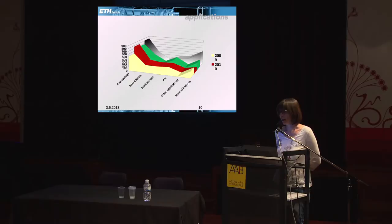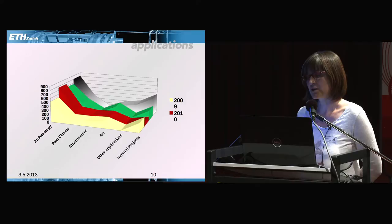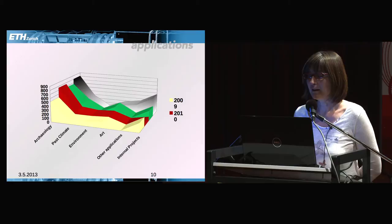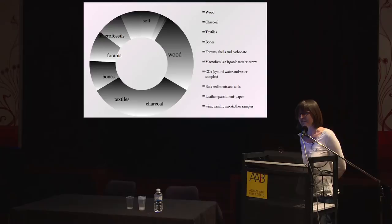Just briefly, who uses radiocarbon? These numbers are from my lab. Over the years we have mainly archaeology — up to 1,000 samples for each study. We also have studies of past climate and environment. But art has an important place here too. You can see what kinds of material we work with, including a big share of textiles.